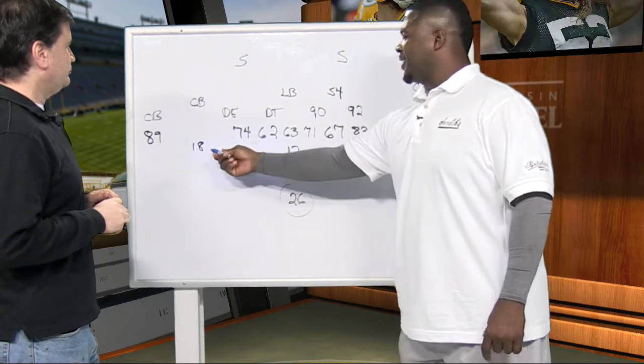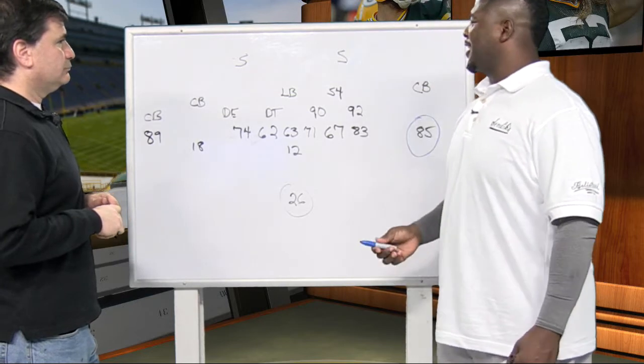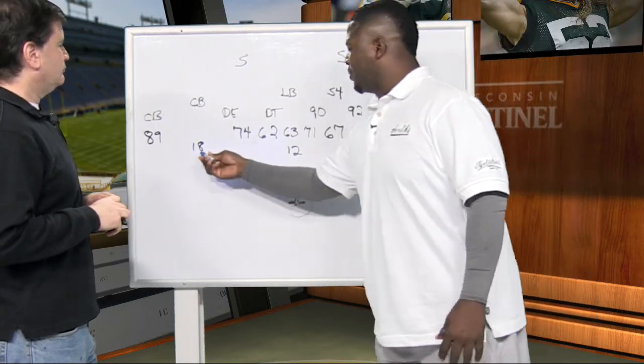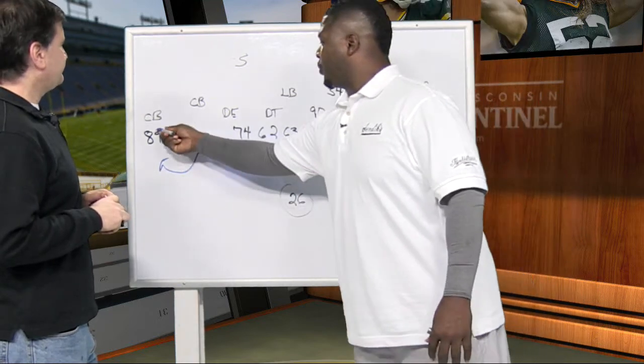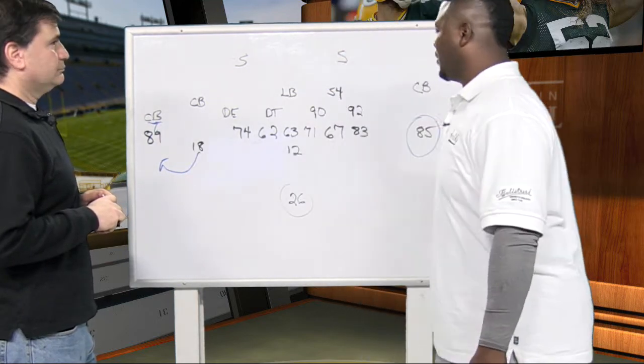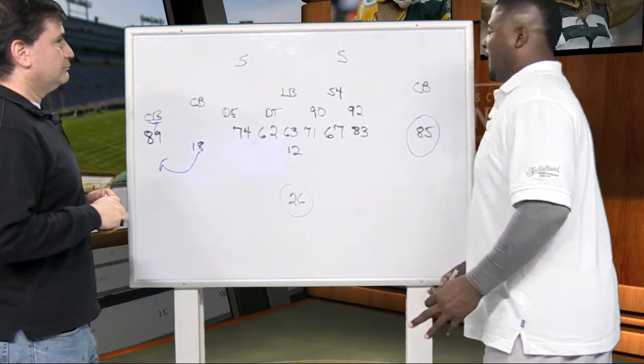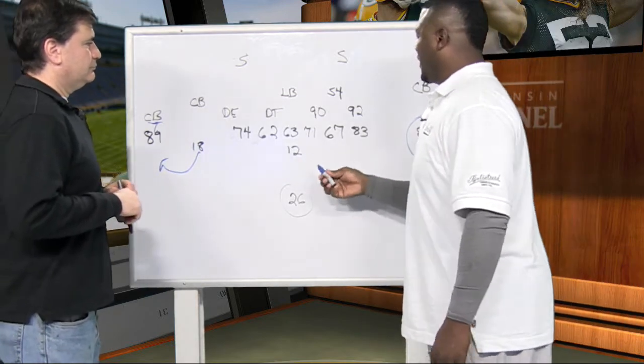And then you got 18 in the slot. Randall Cobb did kind of like a belly, what we call a belly back, like it was going to be a screen. And they had already previously run a screen to where James Jones was the blocker, but they didn't do that. They ran what we call the power play here.